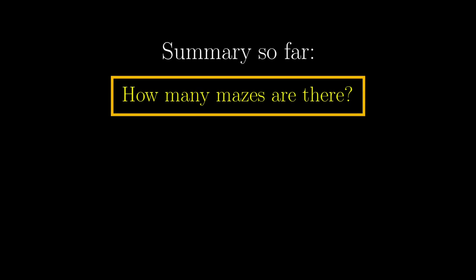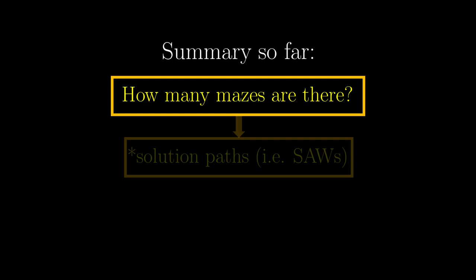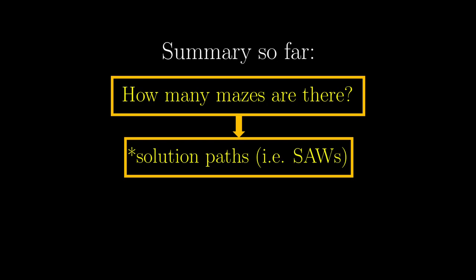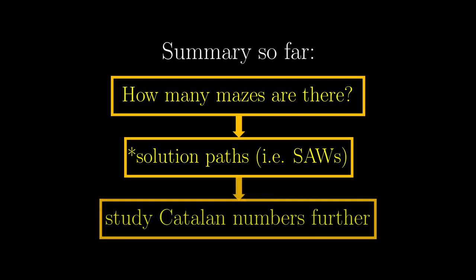So just to be clear about the timeline of the narrative, first of all I thought about the maze problem: How many mazes are there given some size? Then I simplified it to counting the number of solution paths, which happened to be self-avoiding walks, which many mathematicians studied.